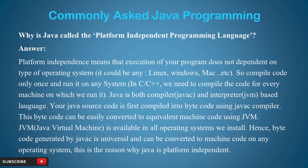Java is both a compiler and interpreter based language. In C, you need to compile the code for every machine on which you run it. Your Java source code is first compiled into bytecode using the Java compiler. This bytecode can be easily converted to equivalent machine code using JVM — Java Virtual Machine. JVM is available in all operating systems. When you write code it is saved as a .java file, and when you compile it, it is saved as a .class file.